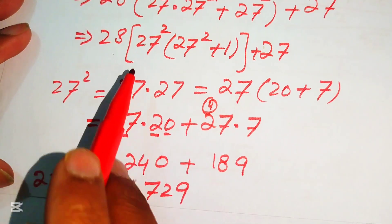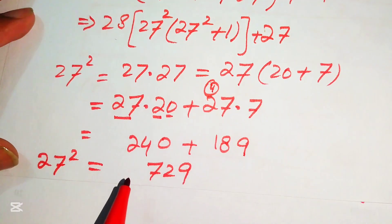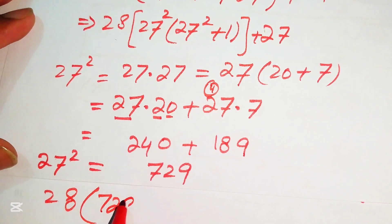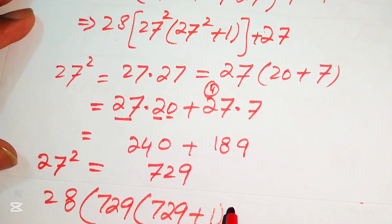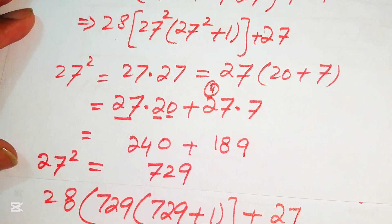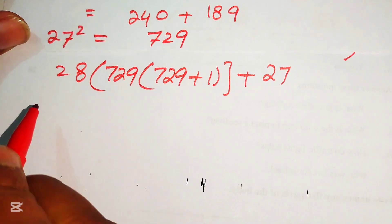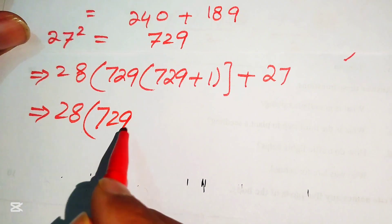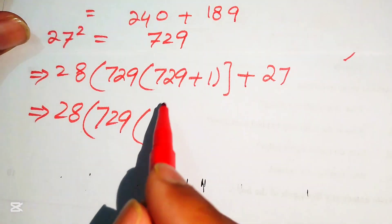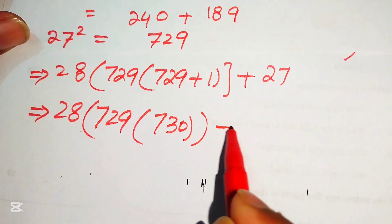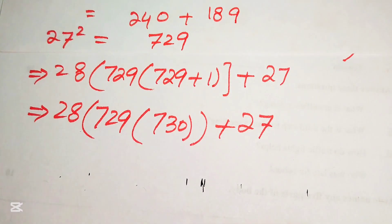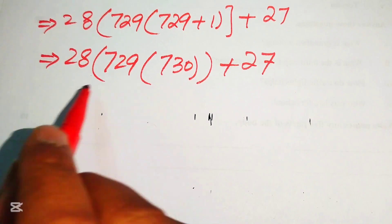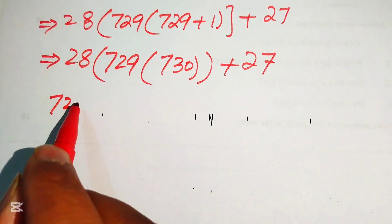Now we replace 27 squared with 729. When we put this value into the equation it becomes 28 times 729 times (729 plus 1) plus 27. Simplifying, 729 plus 1 equals 730, so this is 28 times 729 times 730 plus 27. We first need to multiply 729 by 730, and then proceed with the full expression.